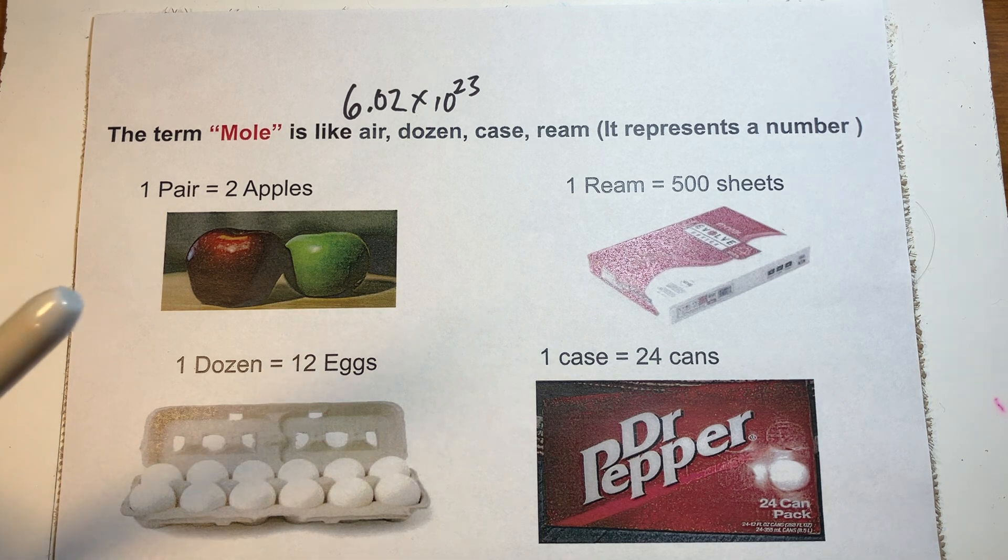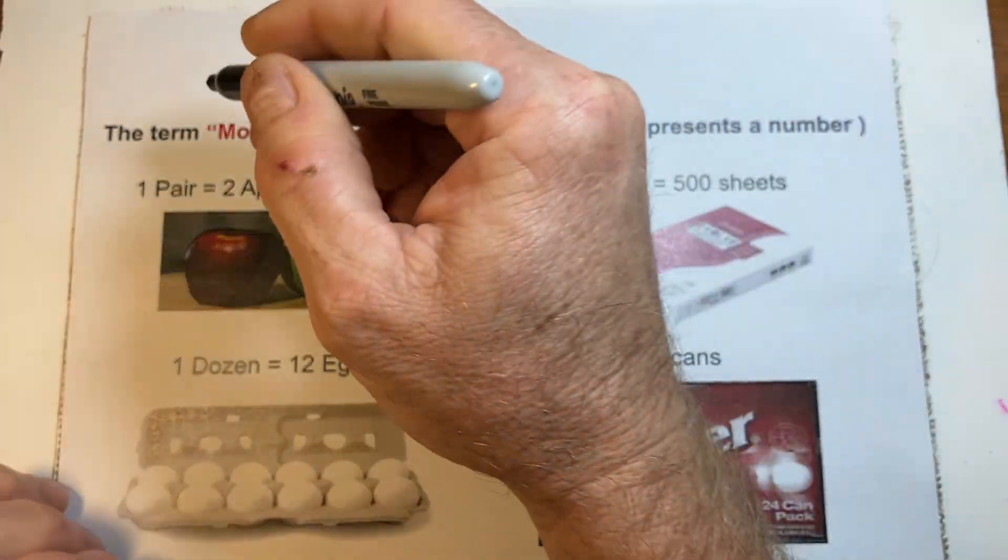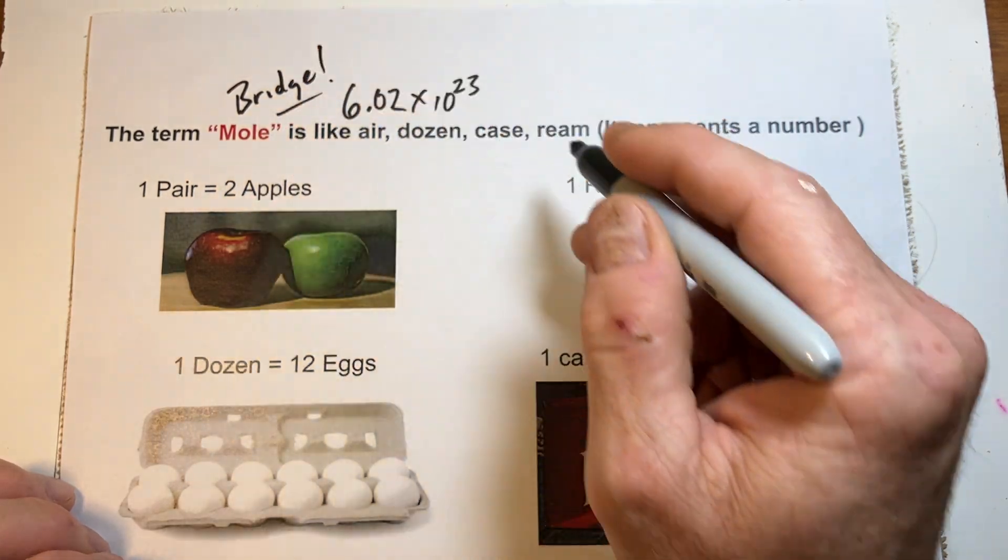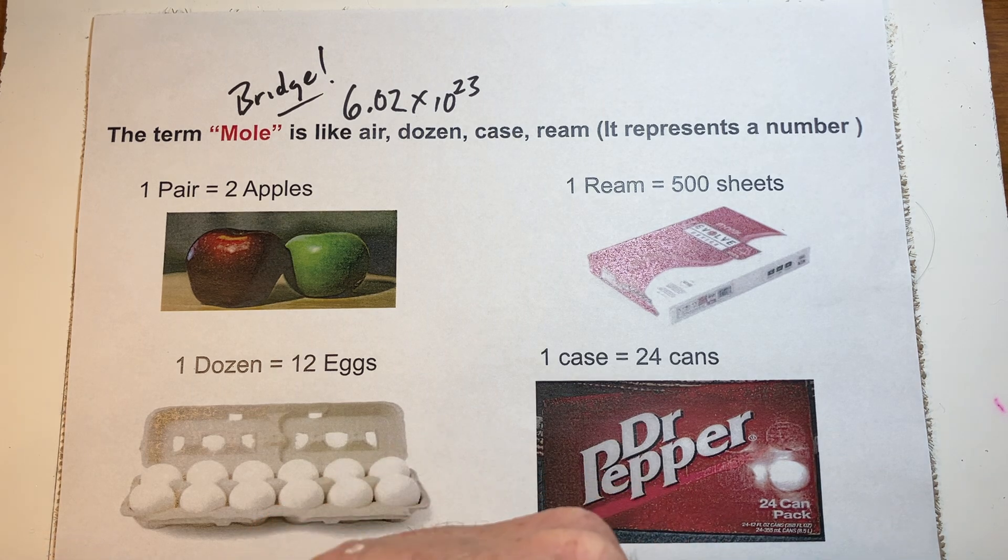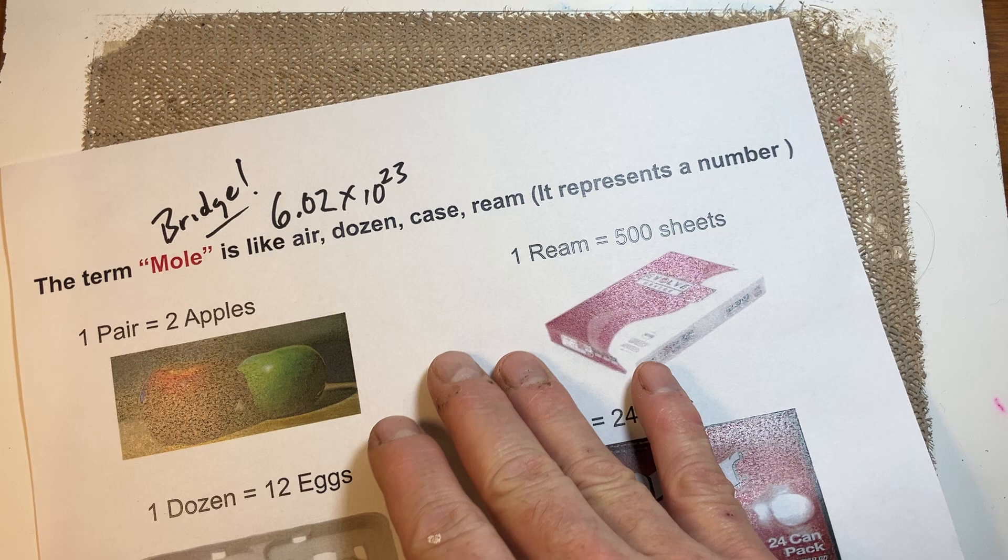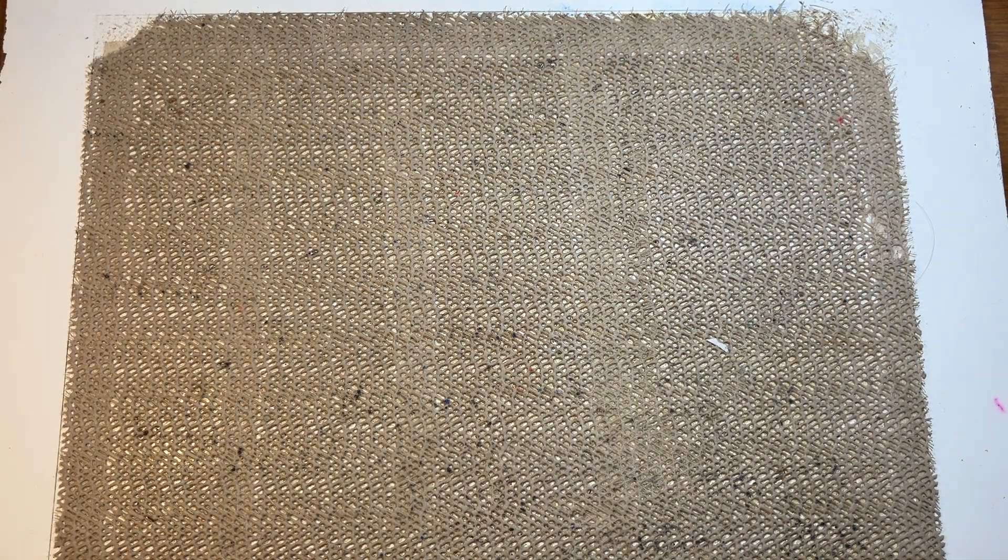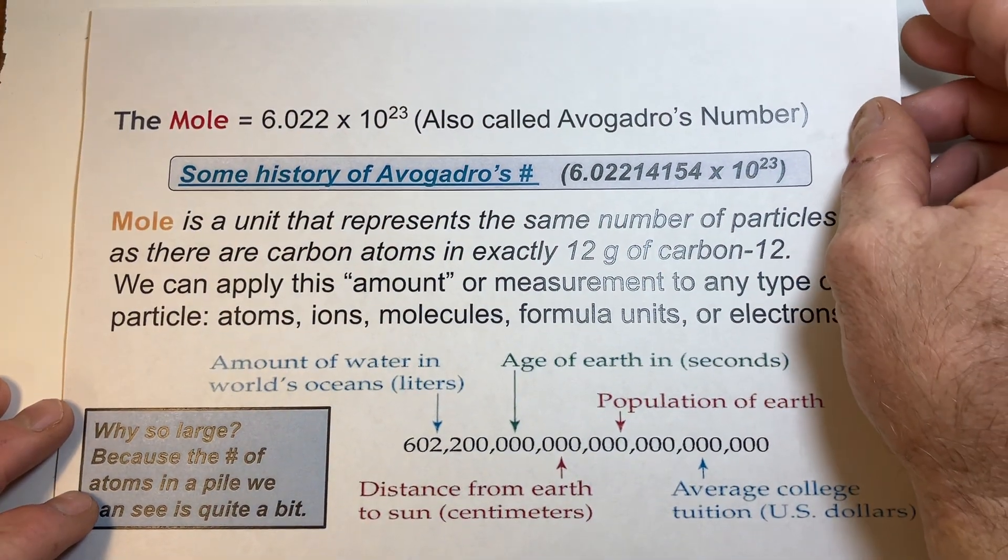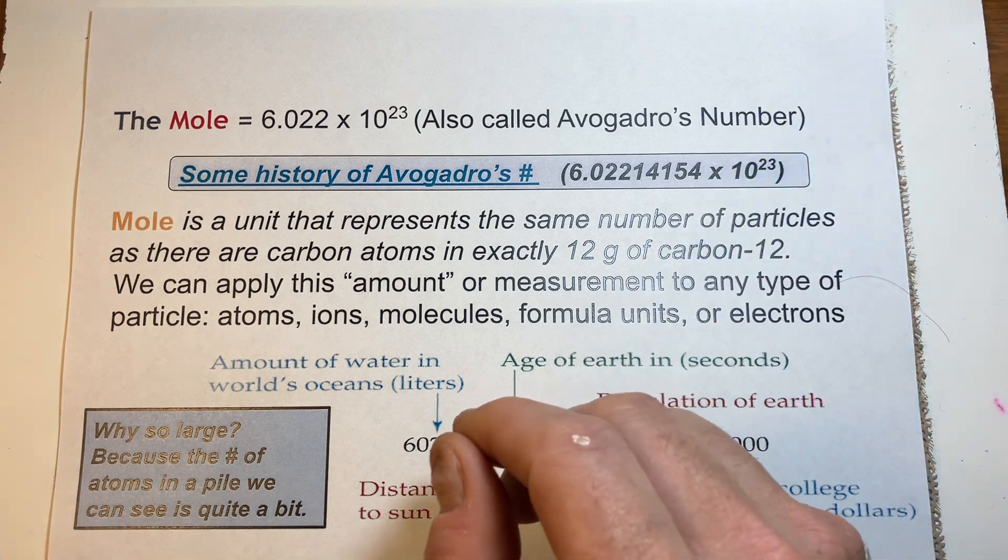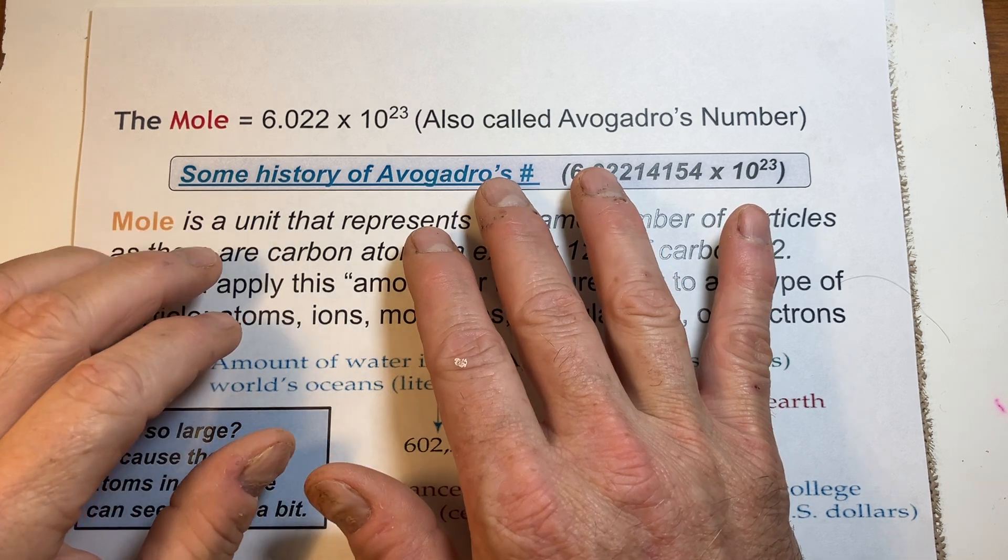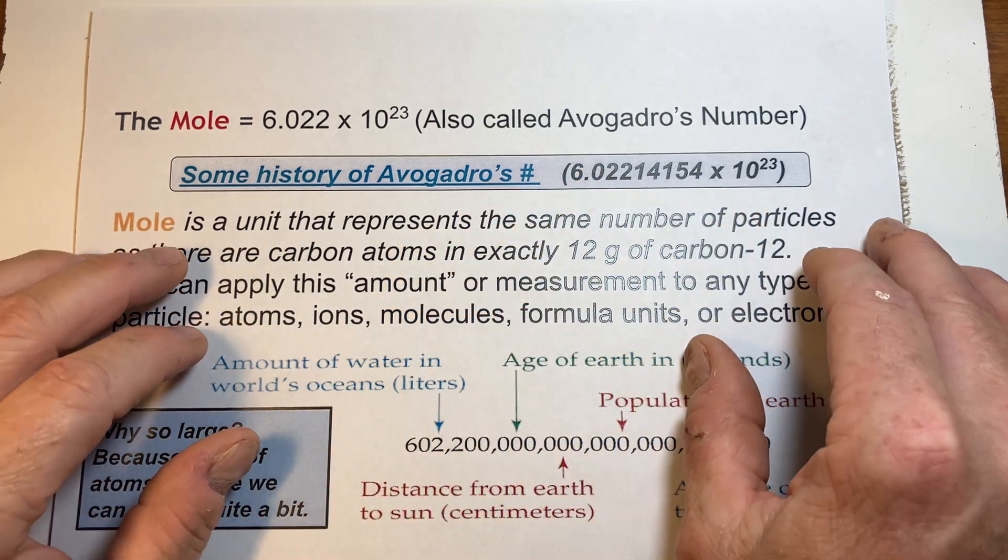And I want you to remember that the term mole is going to be like a bridge that connects the macroscopic world to the microscopic world. So, things we can see connected to things we can't see. It was sort of a term developed by Avogadro to represent a number of atoms. And its history, you can go to more on that for the history of it in this link here in the PDF form of that.